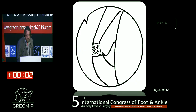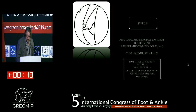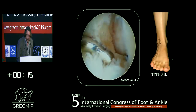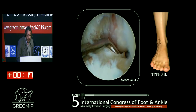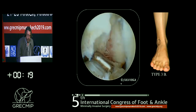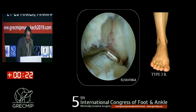Type 3b is the same — a complete tear — but it is a proximal tear. This accounts for only 9% of patients. Concomitant pathology continues increasing. You can see here the stump of the ligament, which is completely disinserted.